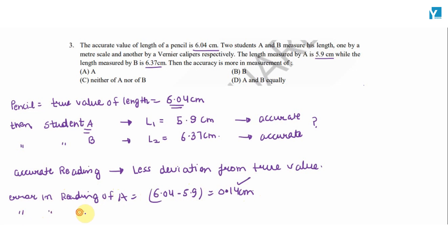Error in reading of student B: |6.37 - 6.04| = 0.33 cm.